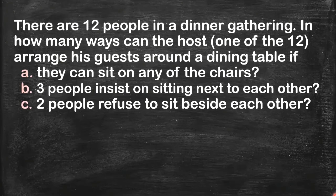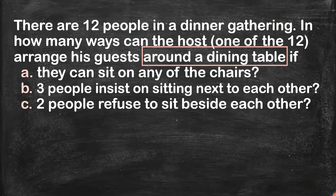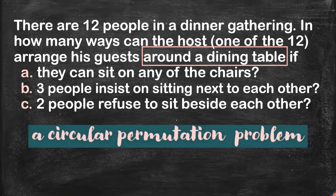The problem goes like this. If you read carefully, you'll see we're going to arrange 12 people around a dining table with different conditions. We're going to arrange people in a circular manner — it doesn't have to be a perfect circle, just circular, even oblong. So obviously, this is a circular permutation problem.